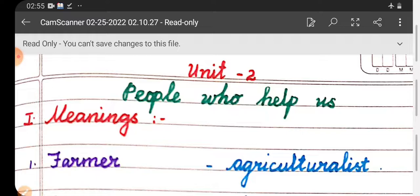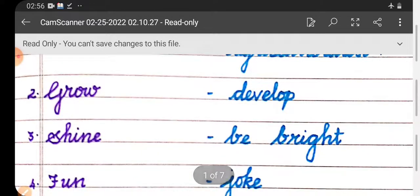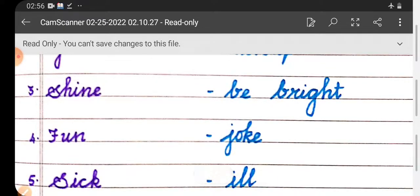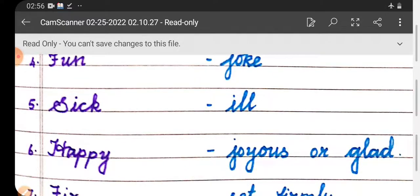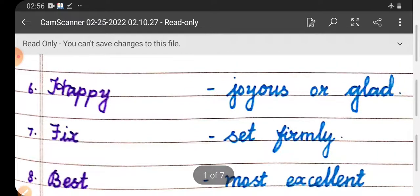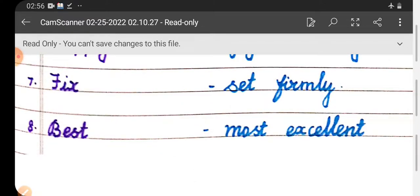Meanings, first roman letter. First one, farmer - agriculturalist. Second one, grow - develop. Third one, shine - be bright. Fourth one, fun - joke. Fifth one, sick - ill. Sixth one, happy - joyous or glad. Seventh one, fix - sit firmly. Eighth one, best - most excellent.